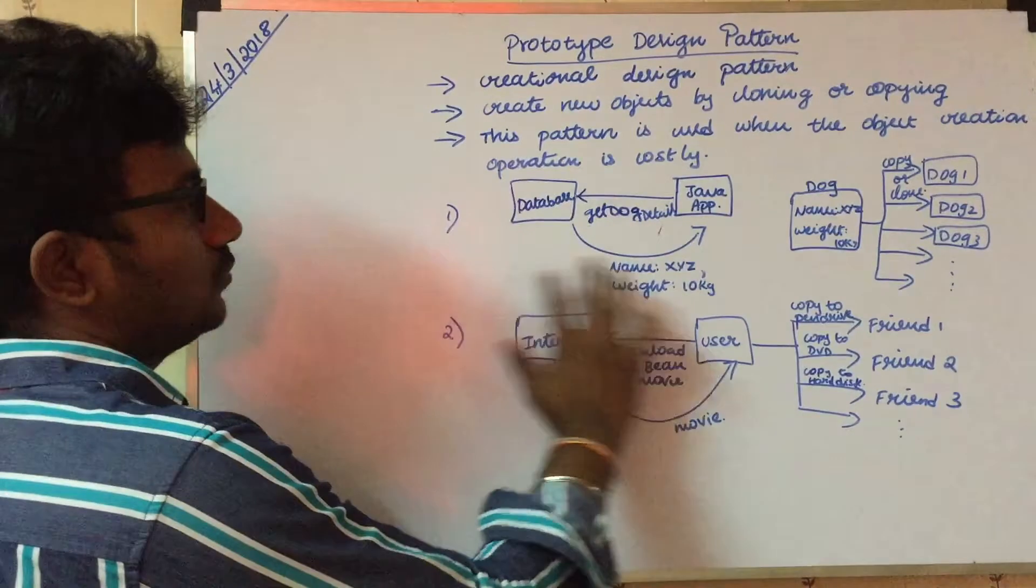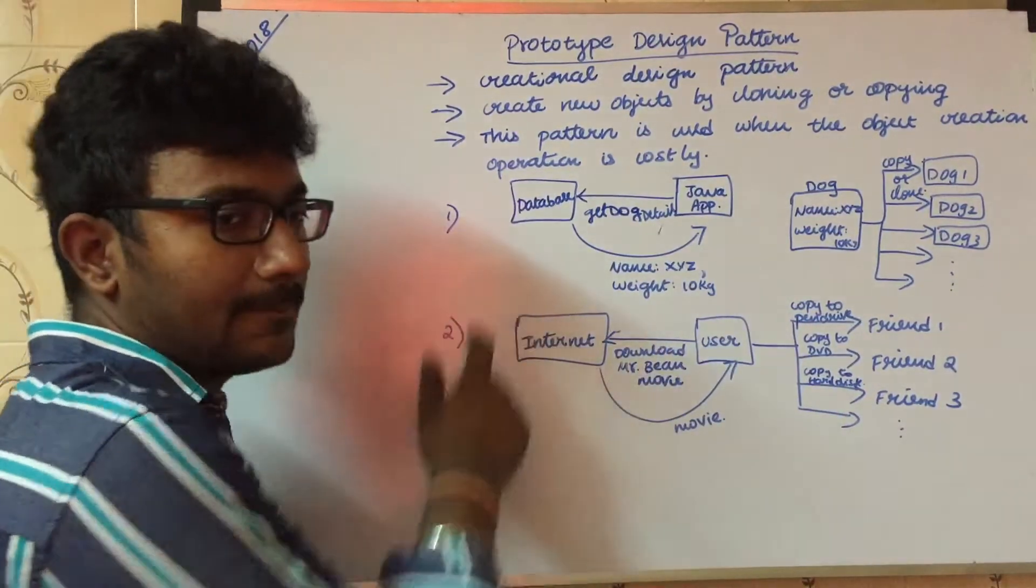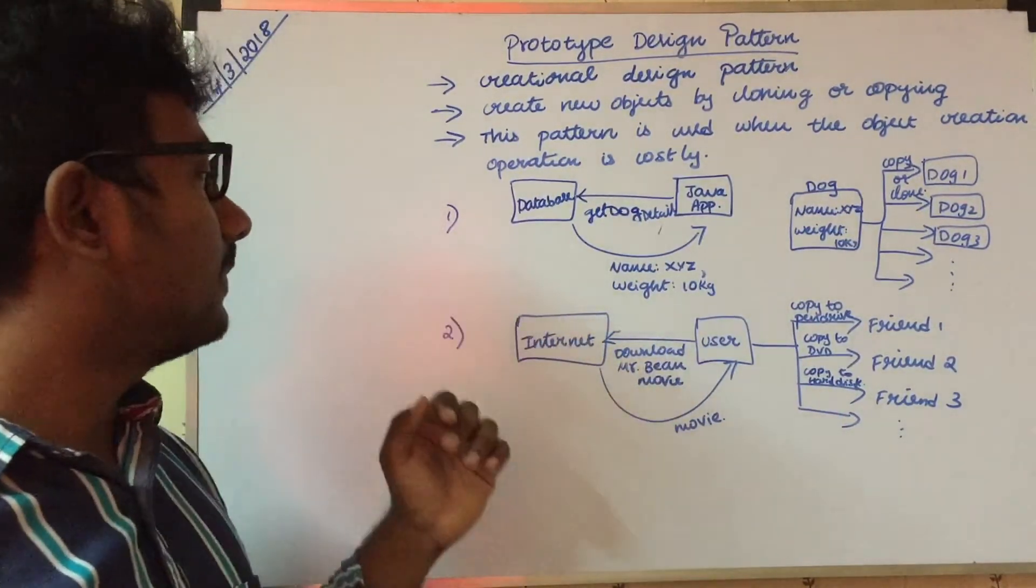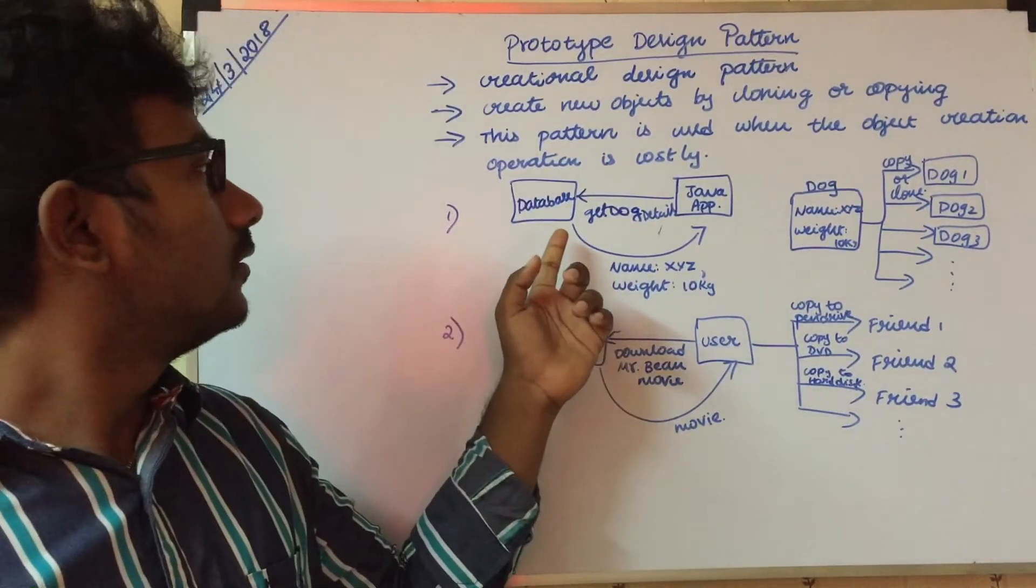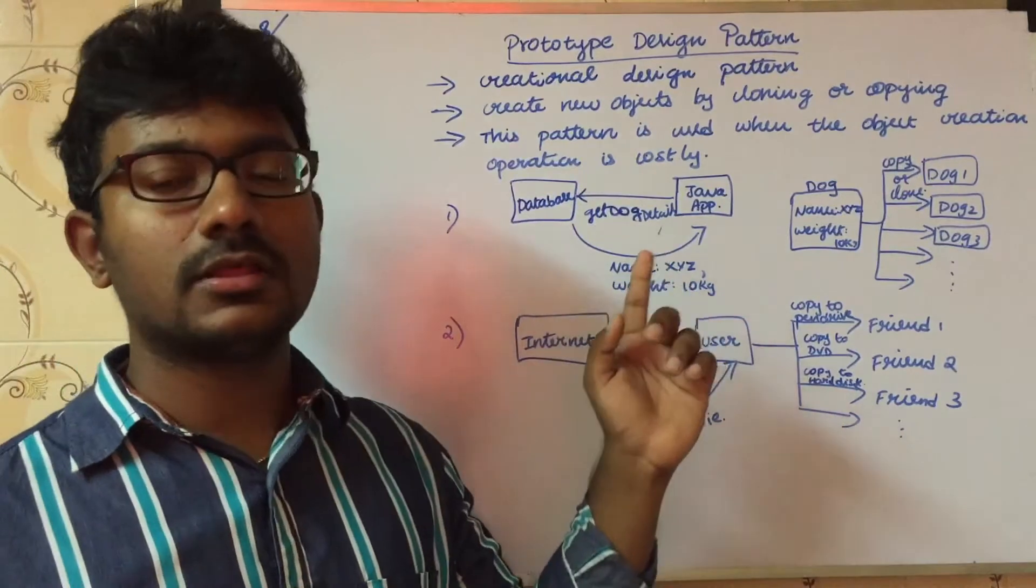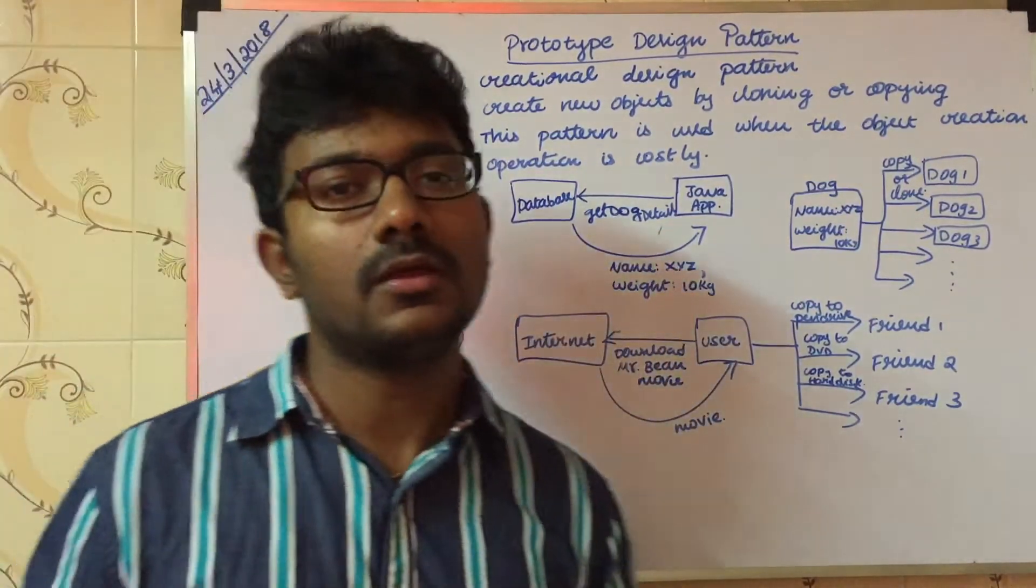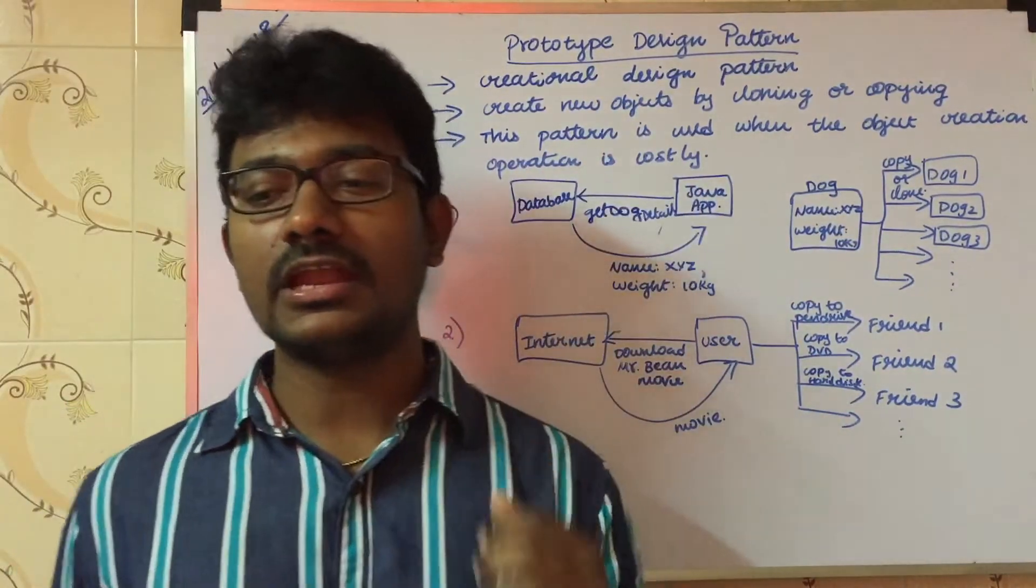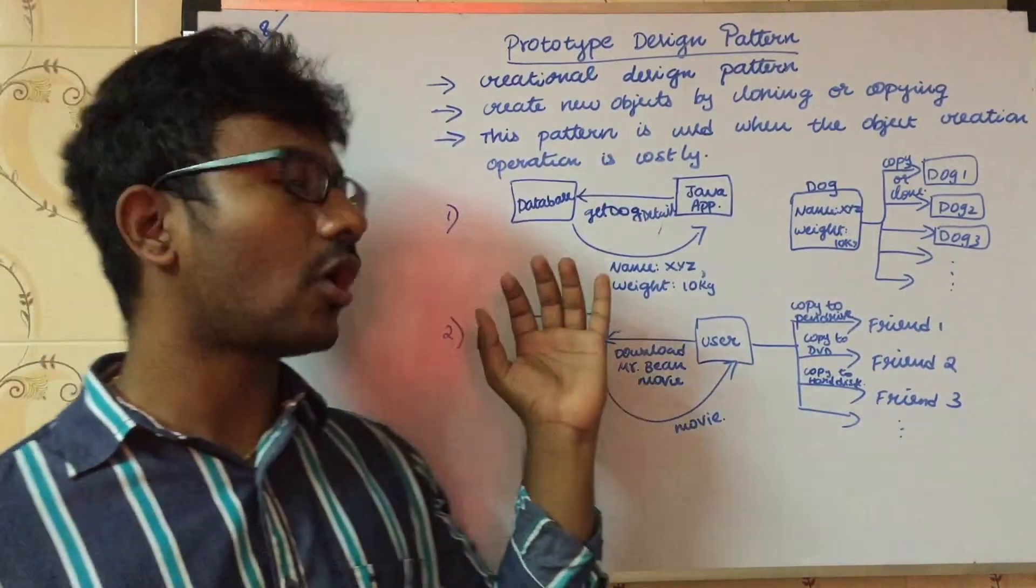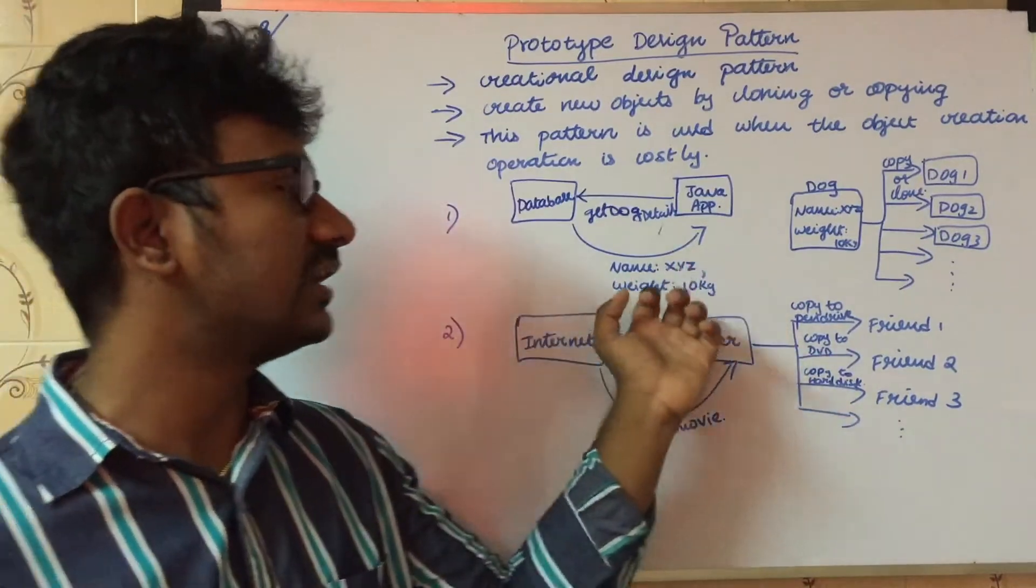How do we use this example? We have two examples: database and internet example. Database and Java application. If you use Java application, you can use the database, get dog details. If you use the database, you can get dog details: name XYZ, weight 10 kg.